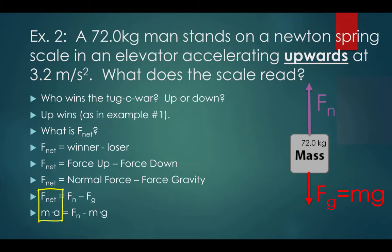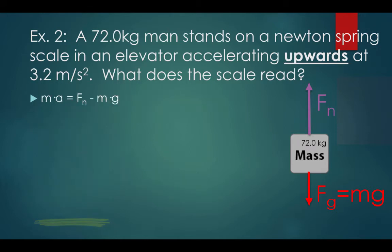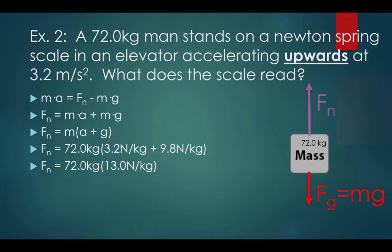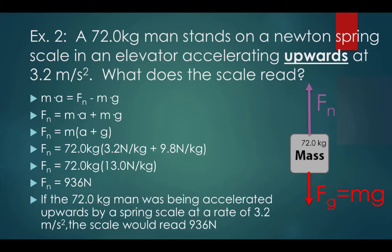The formula for Fnet is mass times acceleration, and force of gravity is mass times gravity. So the equation becomes: mass times acceleration equals force normal minus mass times gravity. Since the Newton's spring scale measures force normal, we solve for Fn: Fn equals mass times acceleration plus mass times gravity, which factors to Fn equals mass times (acceleration plus gravity). Fn equals 72 kilograms times (3.2 plus 9.8) newtons per kilogram, which equals 72 times 13, giving Fn equals 936 newtons. The scale would read 936 newtons.